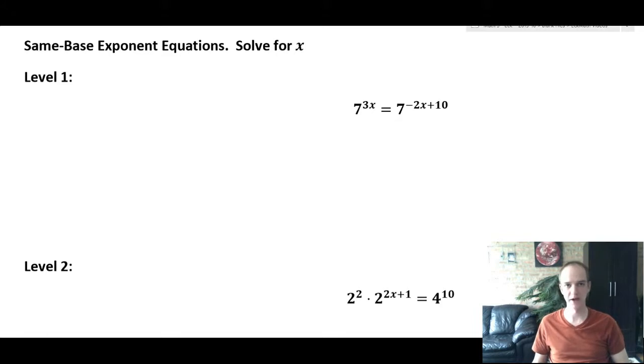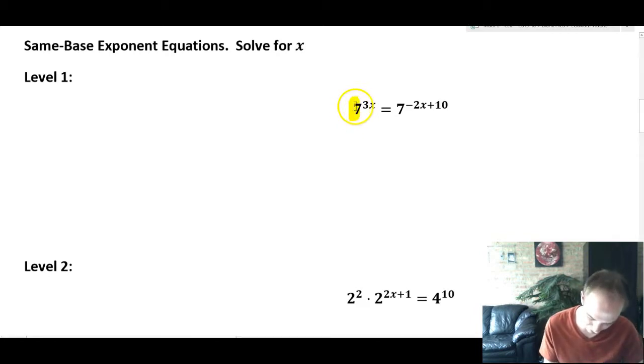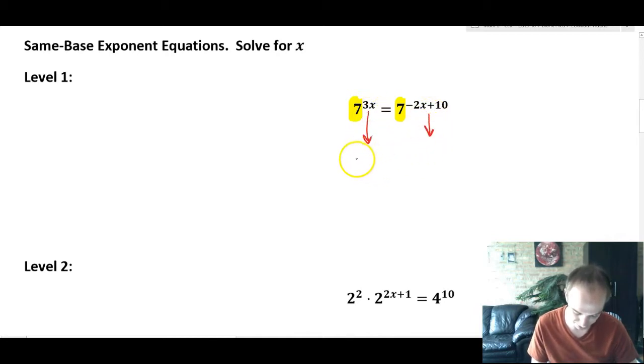The first group of problems we're going to ask you to do is what we're calling same base exponent equations. We call them same base because if you notice this 7 here and this 7 there are the same number and that's the base of the exponent. And if you have something like an exponential equation like this and the bases match, then for this side and the other side to be equal, the exponents have to be equal as well, which means that you can take these powers and set them directly equal to each other.